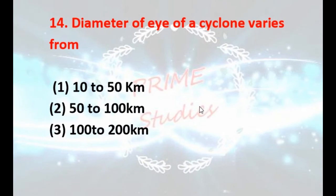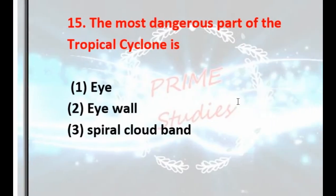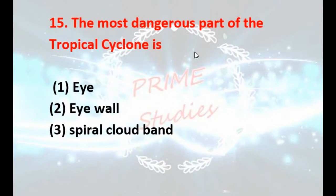The diameter of the eye of a cyclone varies from — 10 to 50 kilometers, 50 to 100 kilometers, or 100 to 200 kilometers? Your answer is first: 10 to 50 kilometers.